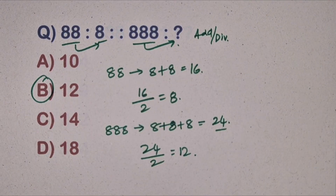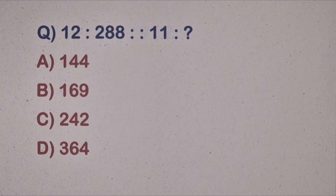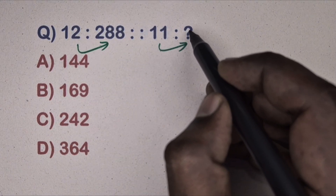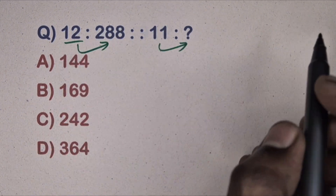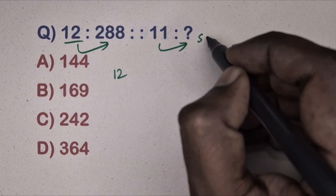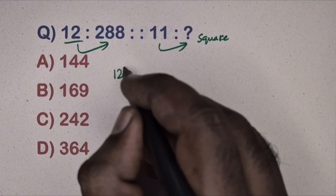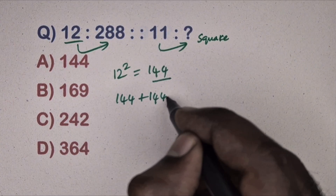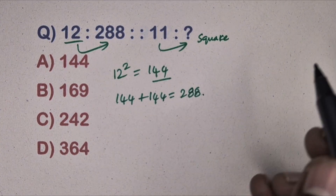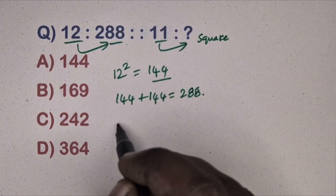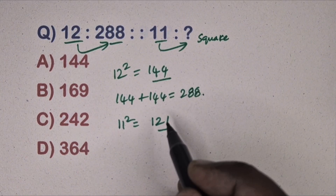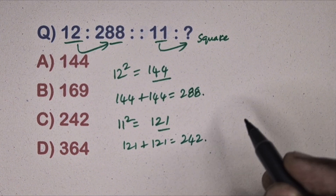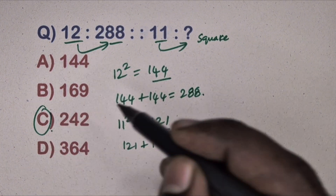Next question: 12 is related to 288, 11 is related to which number? Take 12: 12² = 144, double the digits to get 288. Same way, take 11: 11² = 121, double it to get 242. So 242 is there, and option C is the correct answer.